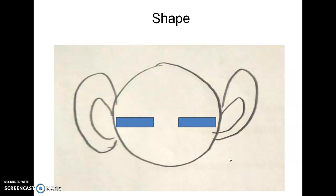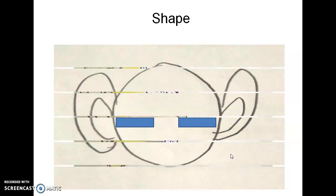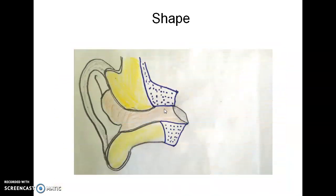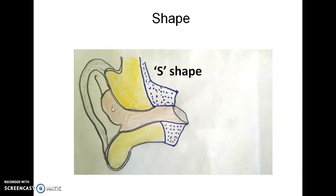Coming to the shape of the external auditory canal — it is not straight. A straight canal would allow insects to nest inside and sound waves to reflect backwards. To prevent this, nature has provided a curved shape. It resembles the letter S, so the external auditory canal is S-shaped.